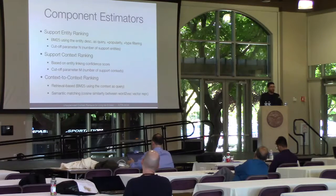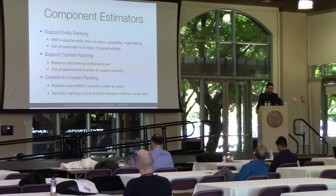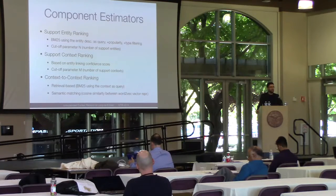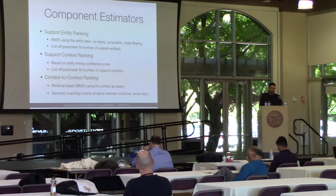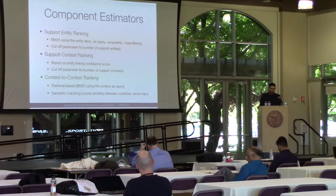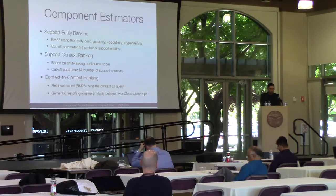The first component is support entity ranking, which is a standard entity retrieval problem. In this work, we use BM25 for ranking entities, and we use the description of the input entity as the query. We rank other well-established entities that have Wikipedia pages, scoring those Wikipedia pages against this description. Additionally, you can incorporate other signals, such as the popularity of these entities or their industry type. There is a parameter controlling how many support entities to take into account.